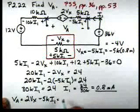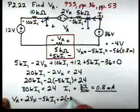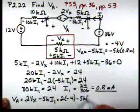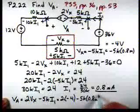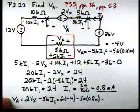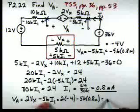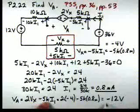So we have 2 times minus 4 minus 5K times 0.8 milliamps. And if we go through and do the calculation, that gives us VA is equal to minus 12.